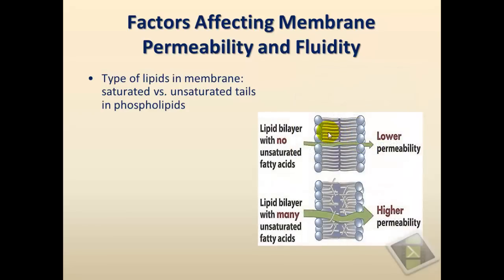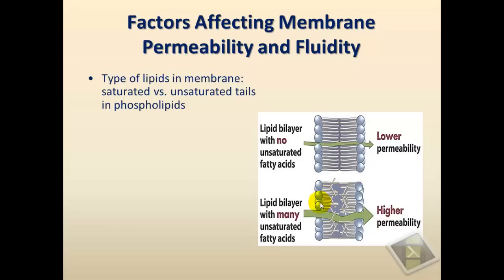A membrane consisting mostly of saturated fatty acid hydrocarbon chains has molecules very close together, making the structure compact. This decreases permeability because there is very little space between molecules, and decreases fluidity — making the membrane more rigid. Whereas a membrane consisting mostly of unsaturated tails with kinks creates bigger spaces between molecules, increasing both permeability and fluidity.